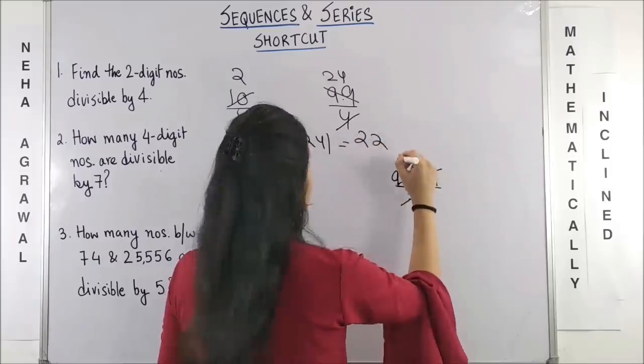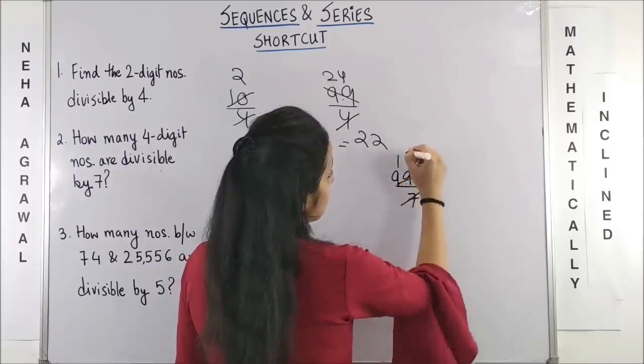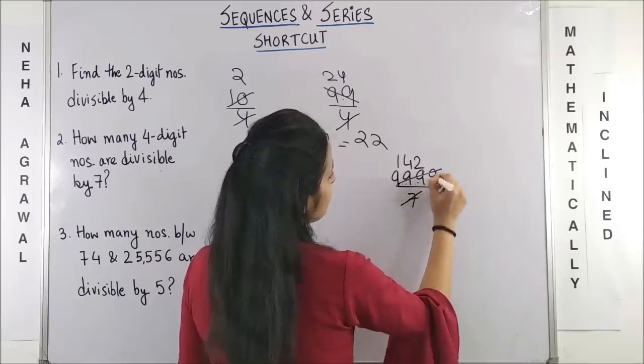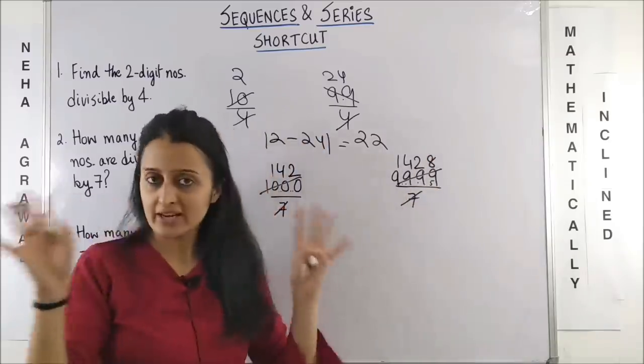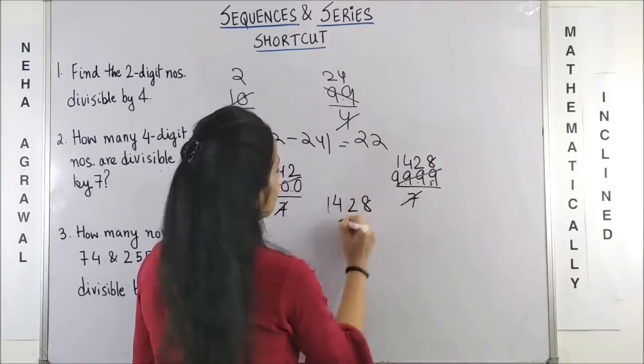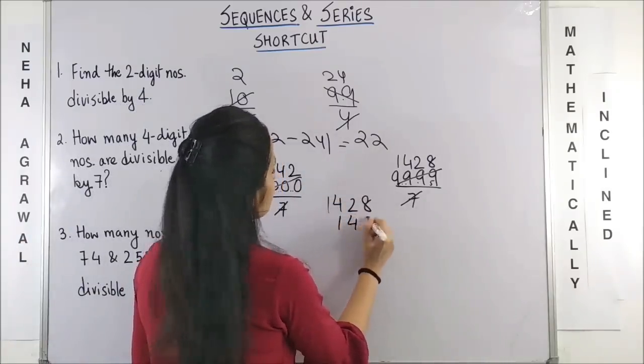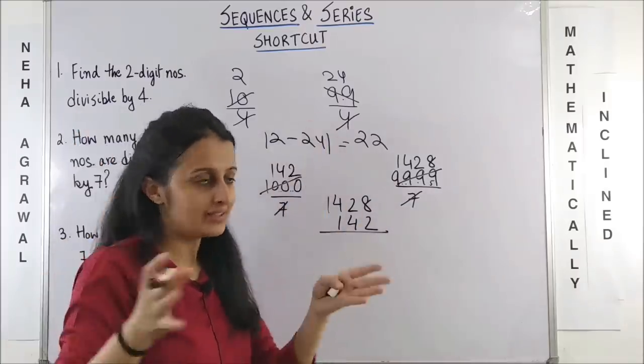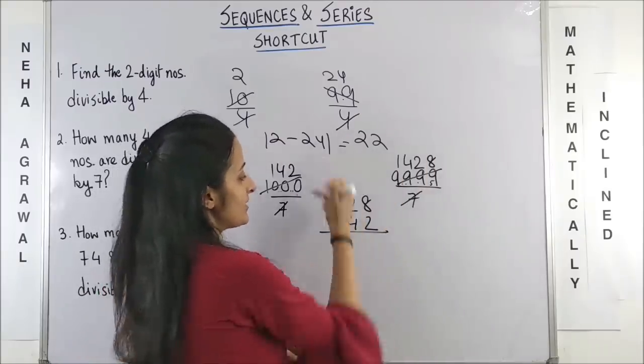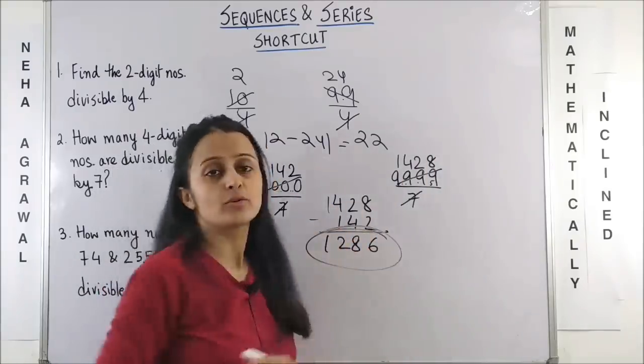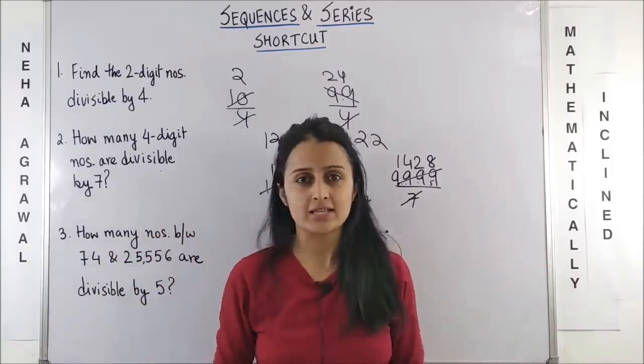So this one will be 7, 1s are 7. 7, 4s are 28. 7, 2s are 14. And 5 here, 7, 8s are 56. Forget about the remainder. You are going to do 1428 minus 142. So either do 142 minus 1428 in the absolute or right minus left you can do. As you can clearly see, the answer is going to be 1, 2, 8, 6. Bingo!